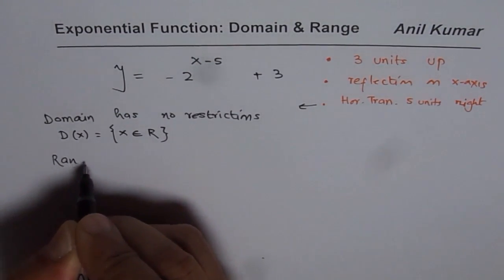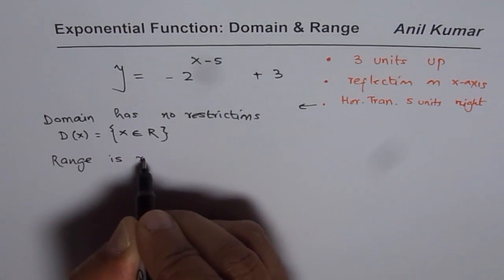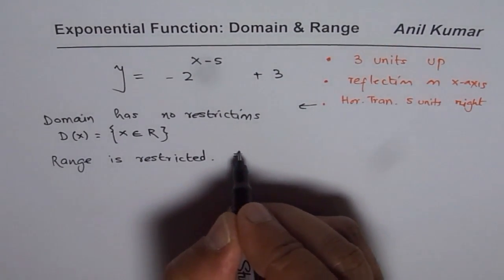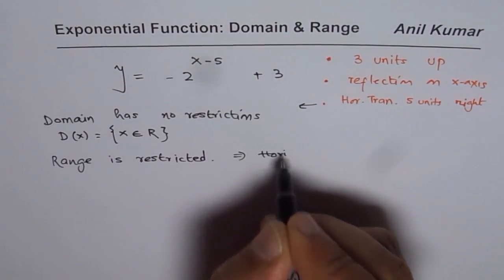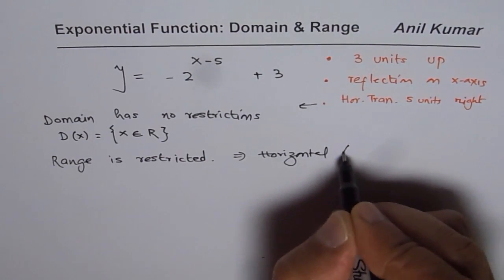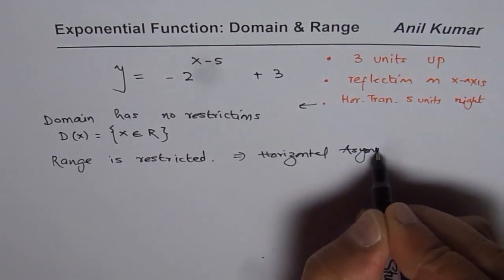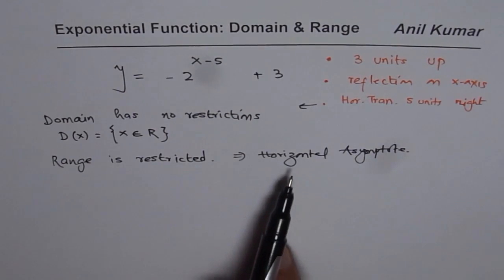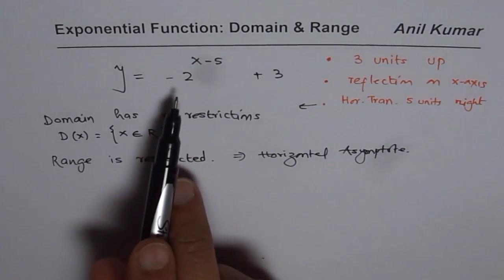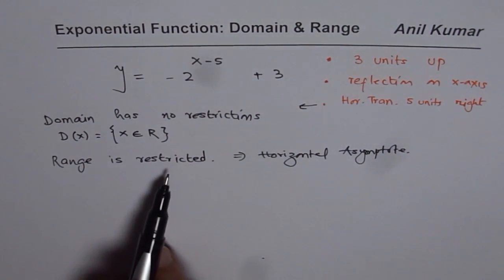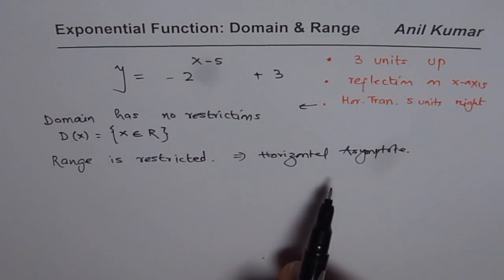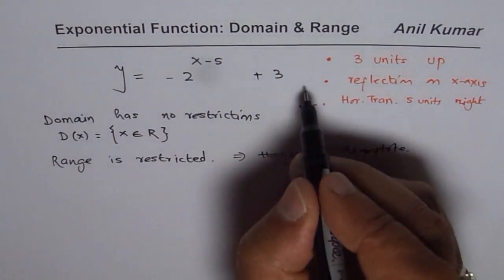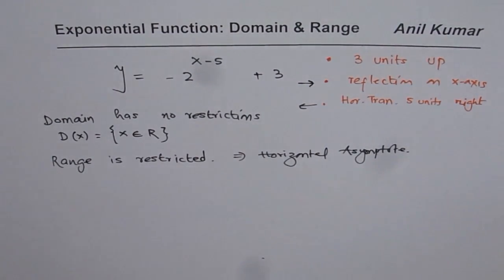As far as range is concerned, the range is restricted. As you know, we have a horizontal asymptote, and the function is trying to approach this asymptote on one side, while on the other side it is unbound. So the range is restricted — it is on one side of the horizontal asymptote. Now since there is a reflection on the x-axis, the graph is affected accordingly.